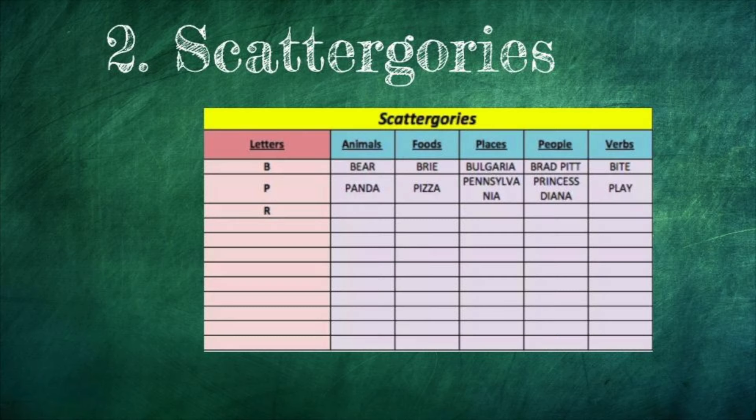Game number two is called Scattergories. Give the students some categories or let them come up with the categories like food, places, people, and give them a letter and one minute to come up with as many answers as possible. This game is a great thing to throw in the last five minutes of class and the answers can get really funny, so it's always fun to share your answers.